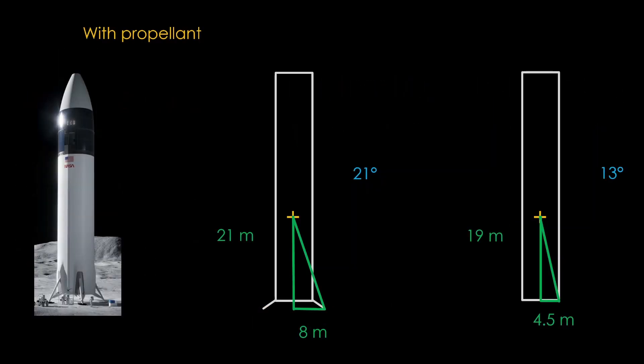Redoing our calculations with the lower center of gravity, we find that a Starship without legs can tilt up to 13 degrees without falling over, and one with legs can tilt 21 degrees.